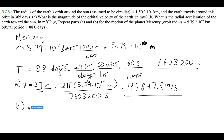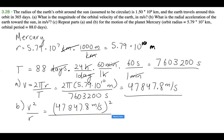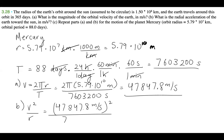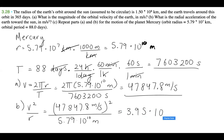And for Mercury part B, we want the acceleration, which is v squared over r. So we have 47,847.8 meters per second squared, over r, which is 5.79 times 10 to the 10 meters. When I plug that into my calculator, I get 3.95 times 10 to the negative 2 meters per second squared. That's the orbital acceleration for Mercury.